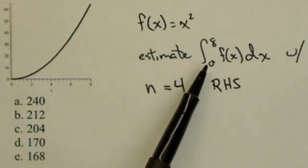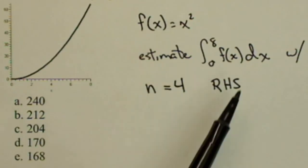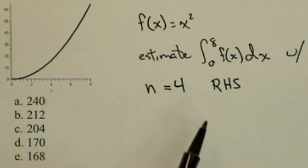So we're going to estimate the integral from 0 to 8 of f of x dx, where f of x is x squared. We're going to use a right-hand sum or the right-hand rule with four rectangles.